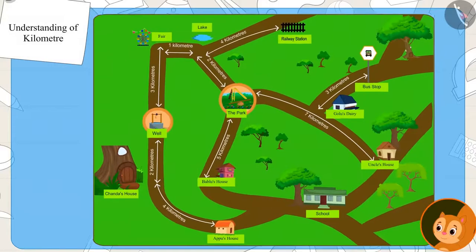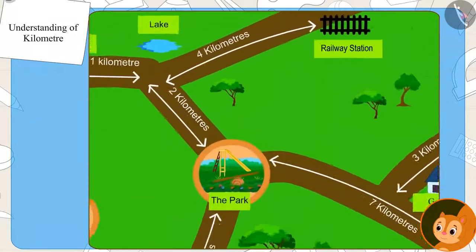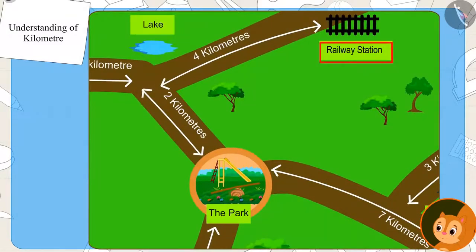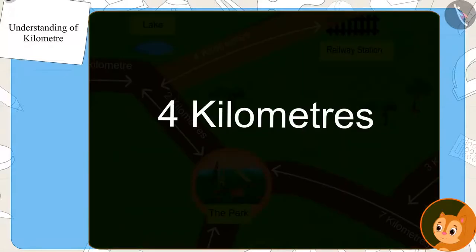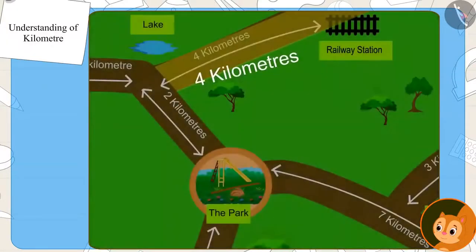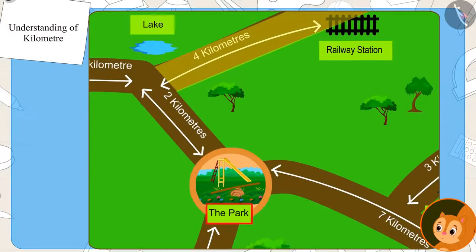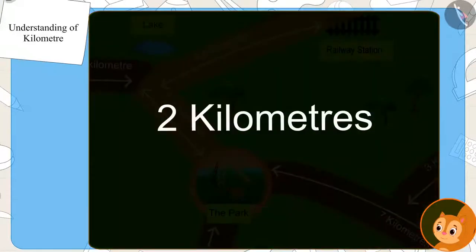Now, Chanda saw on the map that the distance from the lake to the railway station is four kilometers. And that of the park from the lake is two kilometers.